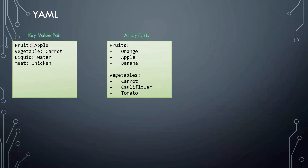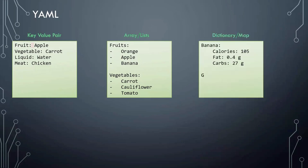How about a dictionary? A dictionary is a set of properties grouped together under an item. Here, we try to represent the nutrition information of two fruits. The calories, fat, and carbs are different for each fruit. Notice the blank space before each item. You must have an equal number of blank spaces before the properties of a single item so they are all aligned together.